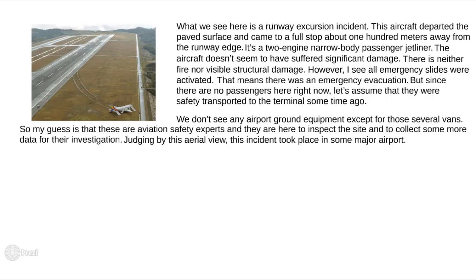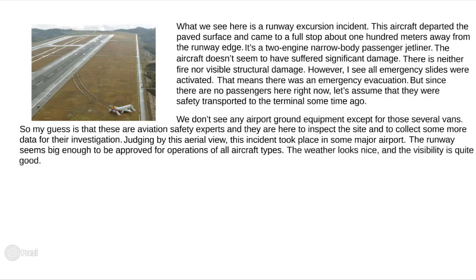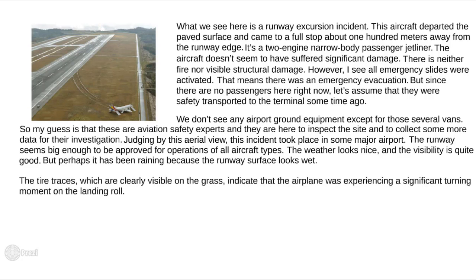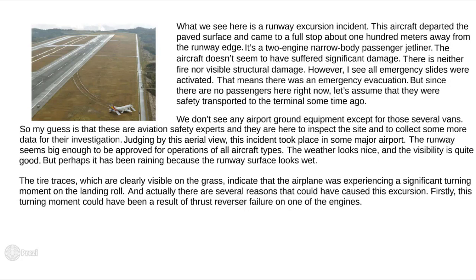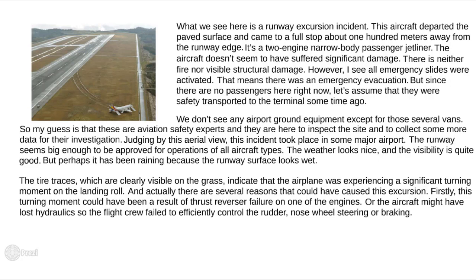Judging by this aerial view, this incident took place at a major airport — the runway seems big enough to be approved for operations of all aircraft types. The weather looks nice and the visibility is quite good, but perhaps it has been raining because the runway surface looks wet. The tire traces, which are clearly visible on the grass, indicate that the airplane was experiencing a significant turning moment on the landing roll. There are several reasons that could have caused this excursion: firstly, the turning moment could have been a result of thrust reversal failure on one of the engines, or the aircraft might have lost hydraulics, so the flight crew failed to efficiently control the rudder, nose wheel steering, or braking.